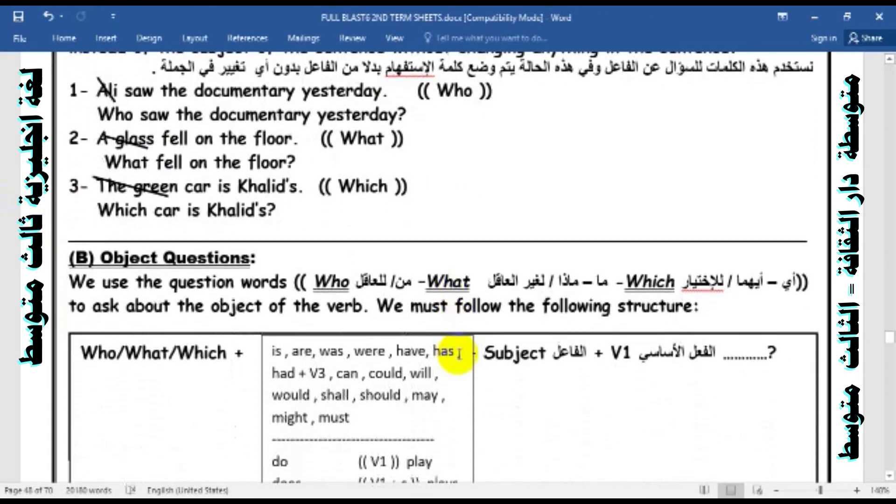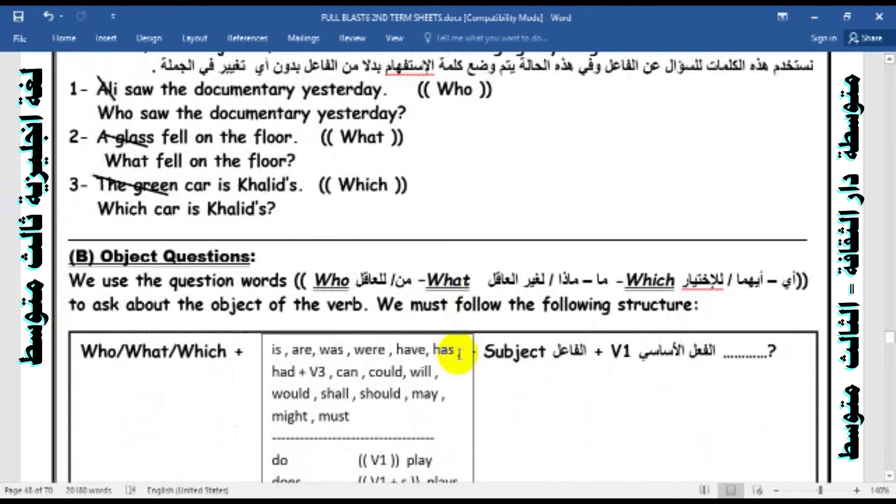The second type: Object questions. How to ask about the object by using these wh-words: who, what, and which. If you want, you must learn the following structure. You must memorize this structure very well. We learned it before. There are four steps. Number one: start by using the suitable question word—who, what, or which.